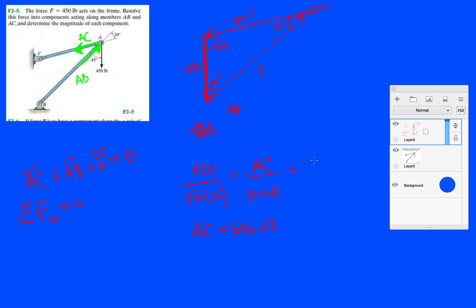Then we can do the same thing for AB. AB over sine 105 equals 450 over sine 30. So 450 times sine 105 divided by sine 30 gives us AB is 869.3 pounds.